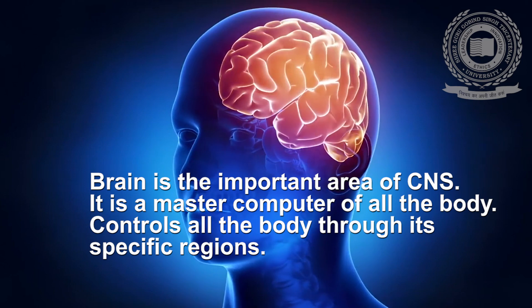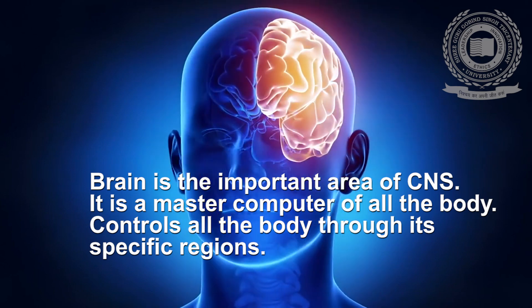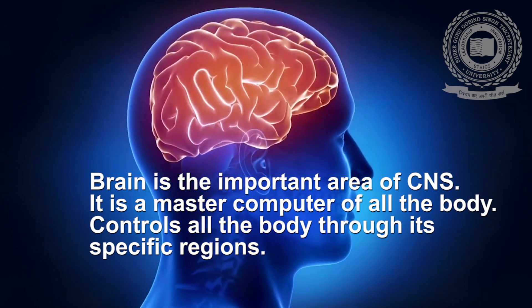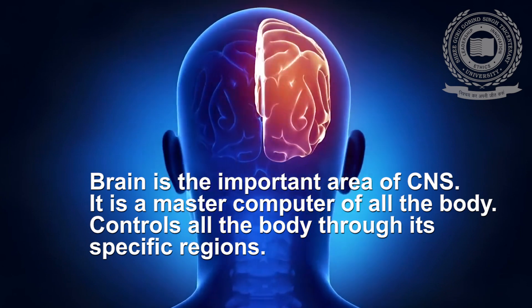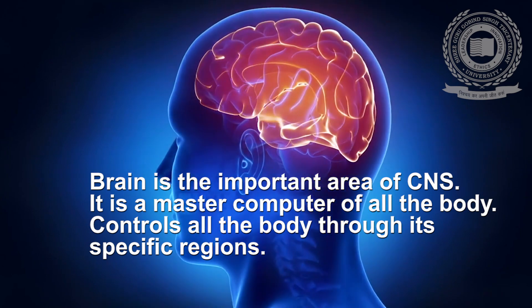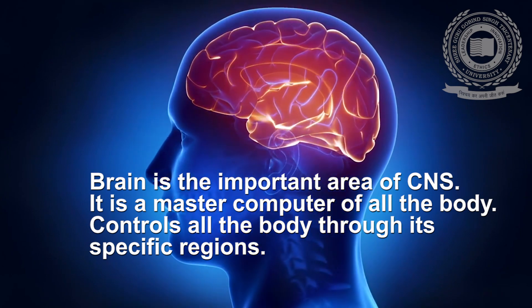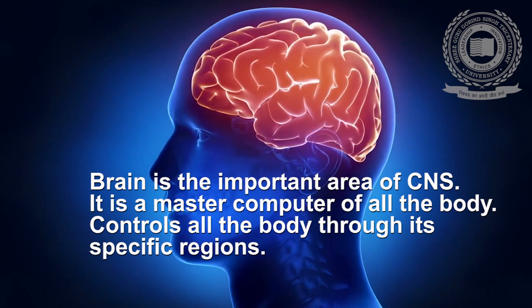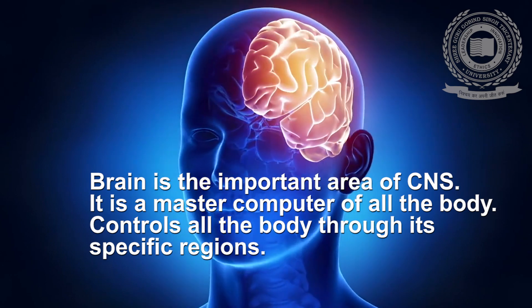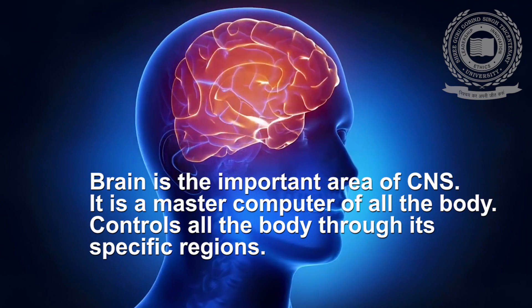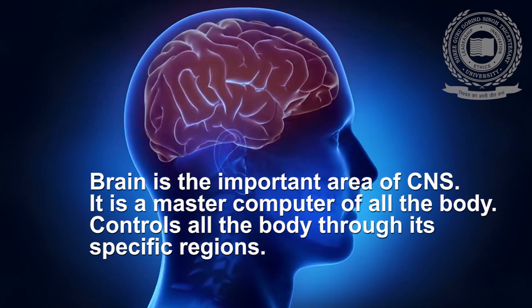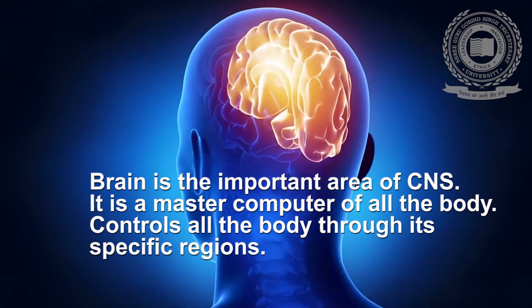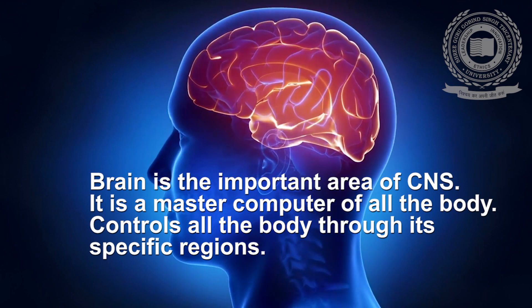Brain is the important area of the central nervous system. It is the master computer of all the body. Brain controls all the body through its specific regions. Here we will discuss about the structure of the brain in detail as well as what is its role.